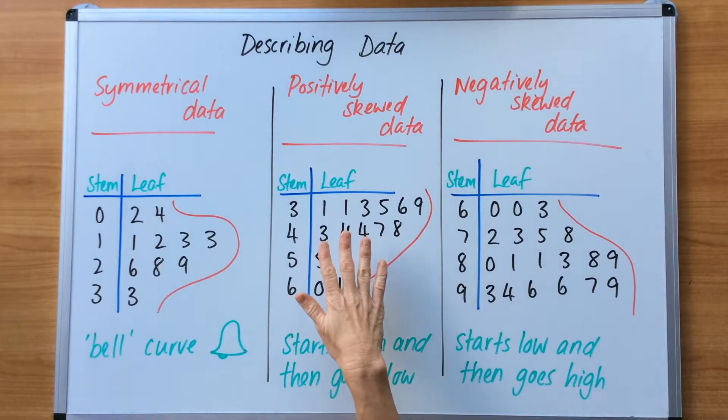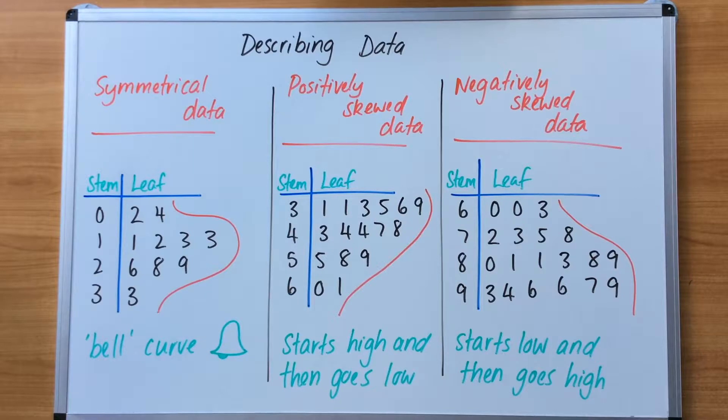I've got symmetrical data, positively skewed data, and negatively skewed data. Symmetrical data, the first one here on the left, will produce a graph which is symmetrical about the center.